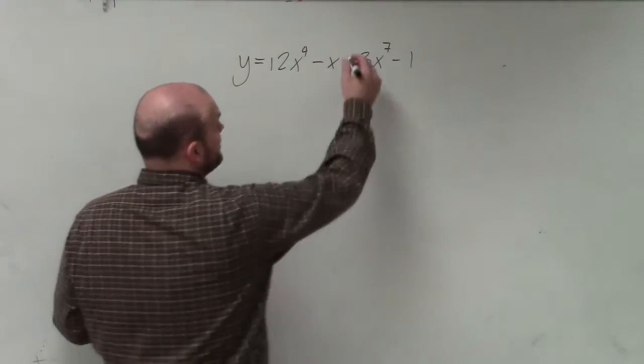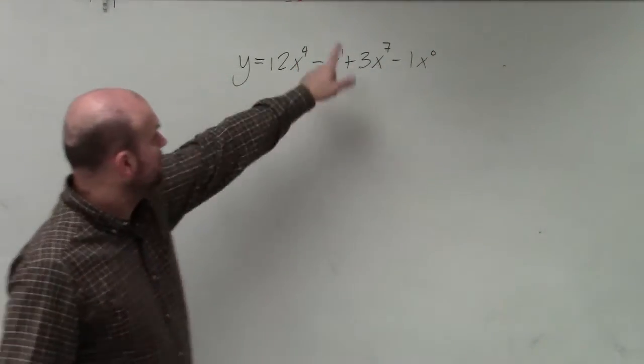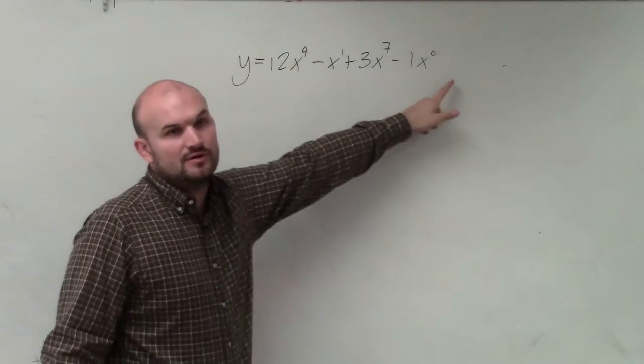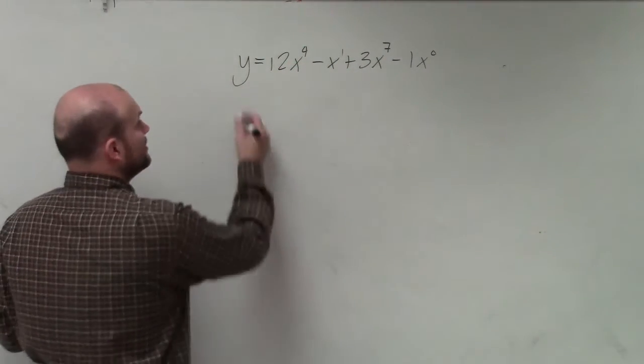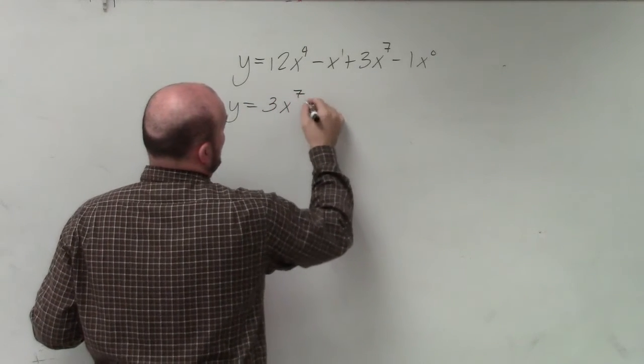You guys can see we have powers here. We have x to the 1, x to the 0. These are not in descending order. It goes from 4, 1, 7, and 0. We want to make sure they're in descending order. So the first thing we're going to do is rewrite them so the powers are in descending order.